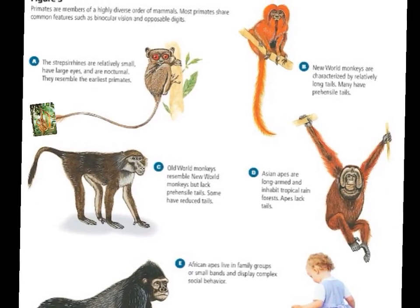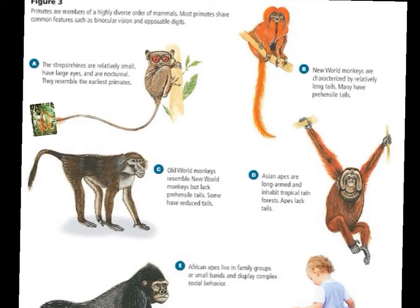The New World Monkeys have very long tails, and many have those prehensile tails we discussed, using them to grasp things — the spider monkey being a prime example. The Old World Monkeys look somewhat similar to New World Monkeys but lack the prehensile tail; some have reduced tails. A baboon would fall into the Old World Monkeys category.